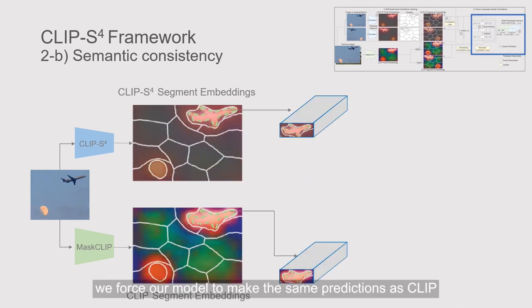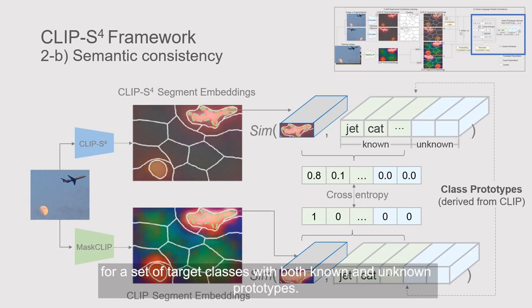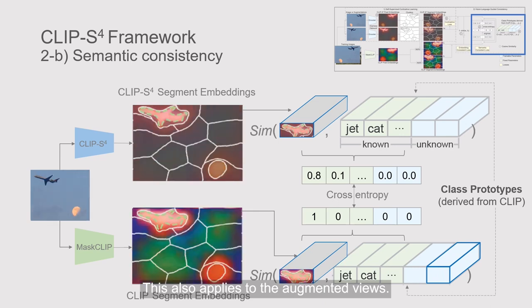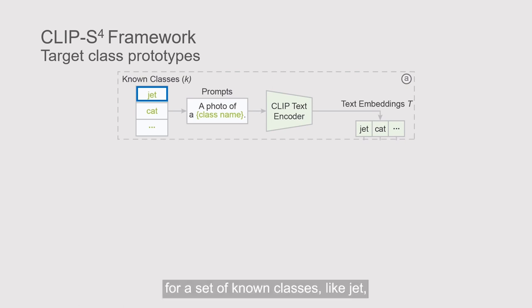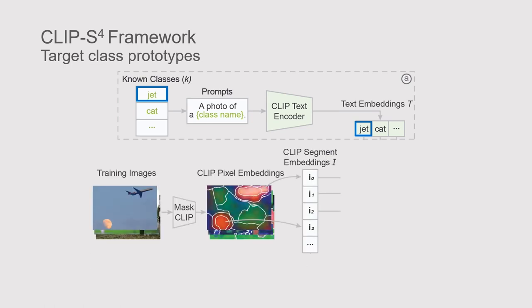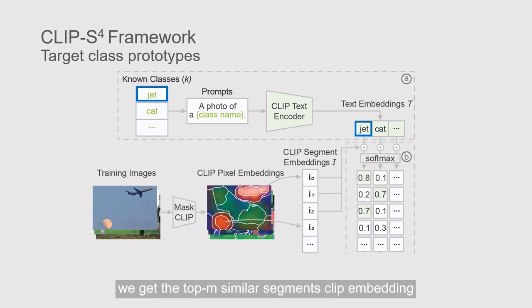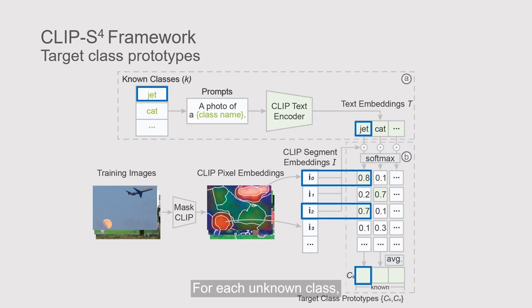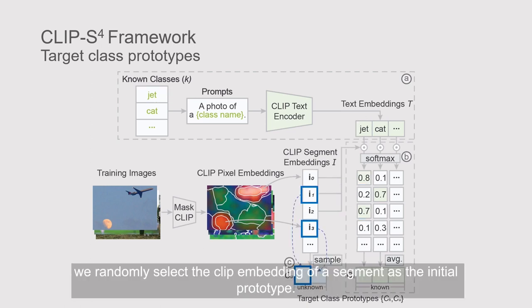This also applies to augmented views. For semantic consistency, we force our model to make the same predictions as CLIP for a set of target classes with both known and unknown prototypes. A class prototype is an embedding vector representing the class in the embedding space. We carefully design these prototypes to enable both known and unknown predictions. For known classes, we first obtain their CLIP text embeddings, then for each known class we get the top-K most similar segments' CLIP embeddings and average them as the embedding prototype. For each unknown class, we randomly select the CLIP embedding of a segment as the initial prototype.